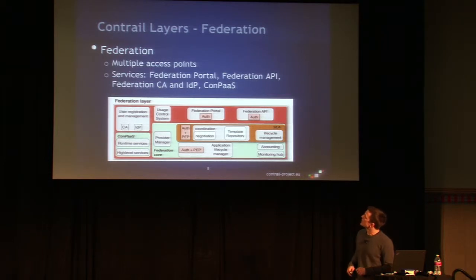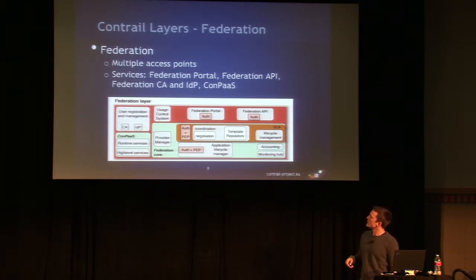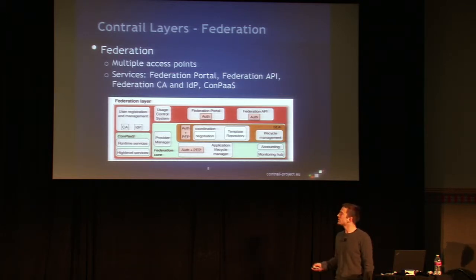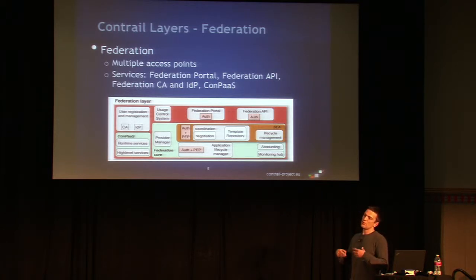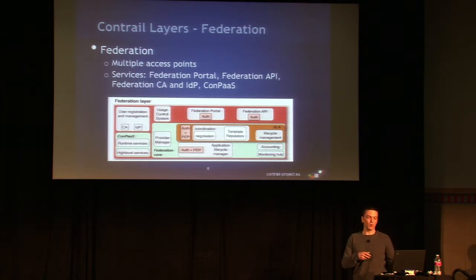At the federation layer we have a plethora of services. For instance, we have a federation portal service with authentication and authorization components. We have the API component that provides a RESTful API for applications or PaaS. We have a usage control system — UCon. We have a user registration and management system consisting of a certificate agency and our own identity provider, which is set up as a bridge between other external providers. So not only can we support Contrail users, we can also support users from external identity providers — external communities with their own identity providers — and the mapping is done by this component.